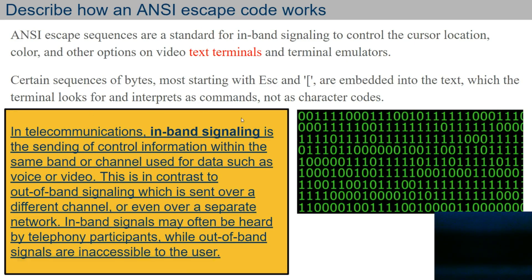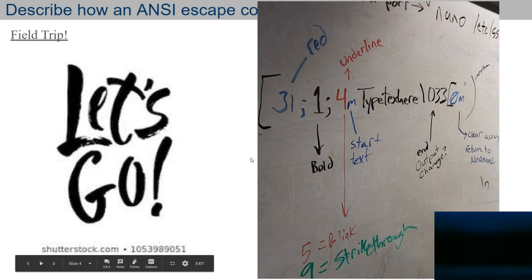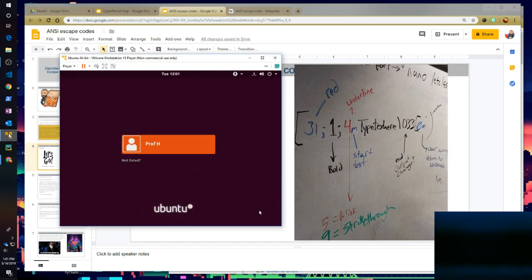Here's some more information about in-band signaling. Basically, when you type in something like this, the terminal will output a different type of output. So rather than just plain white text, it'll give you maybe red, or it'll underline it, or it'll make it blink. It'll do all kinds of different things. So let's go check that out.